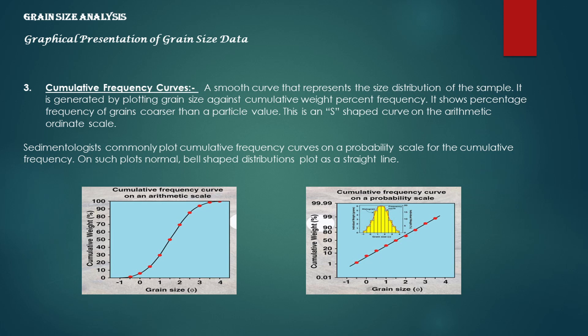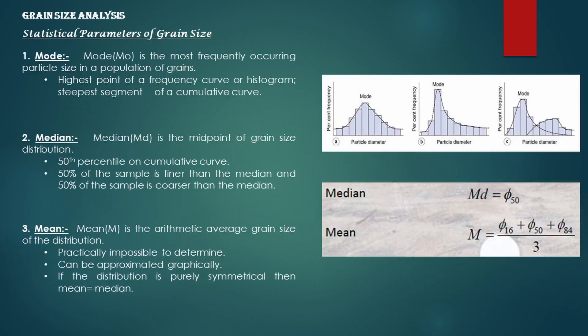Sedimentologists commonly plot cumulative frequency curves on a probability scale for the cumulative frequency. On such plots, normal bell-shaped distributions plot as a straight line.